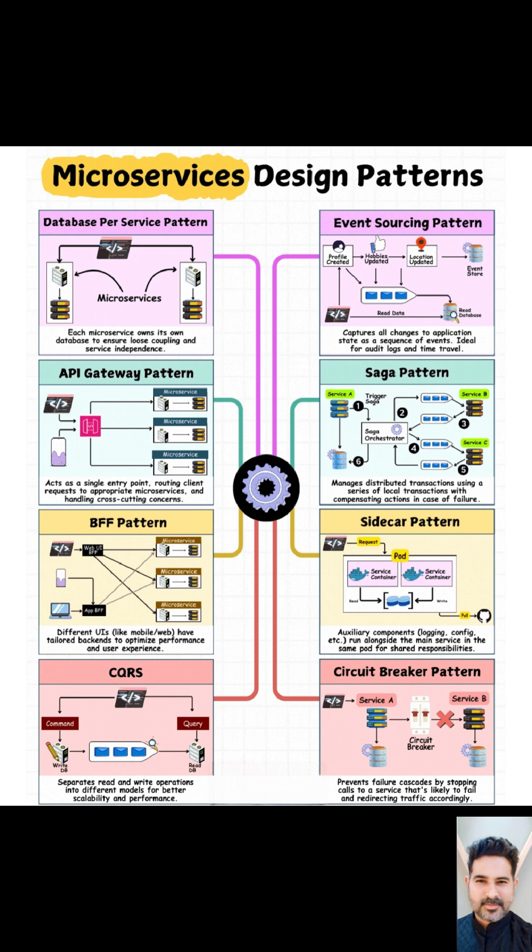How do these microservices work together? They communicate with each other using well-defined rules called APIs. Now, let's talk about the patterns we use when building these microservices. The diagram shows several common patterns that help us solve specific challenges.